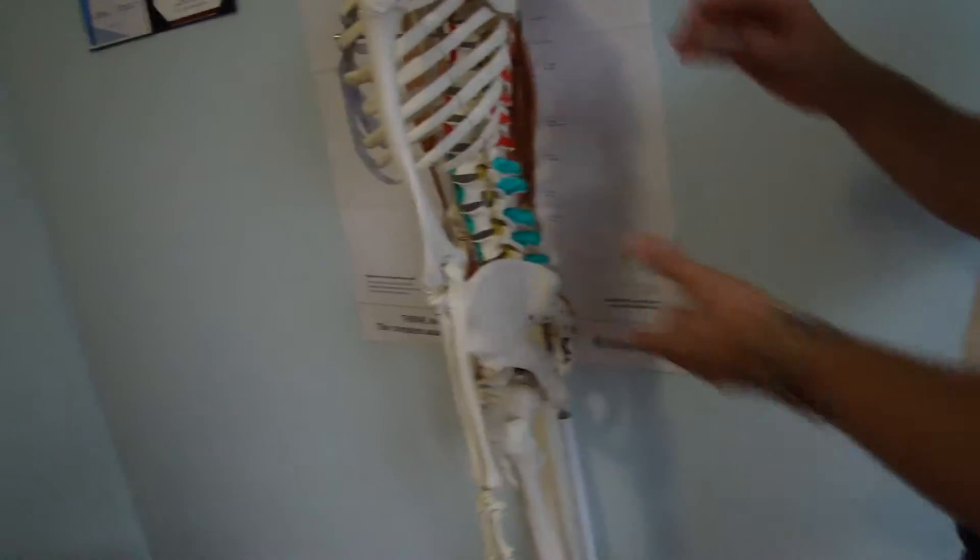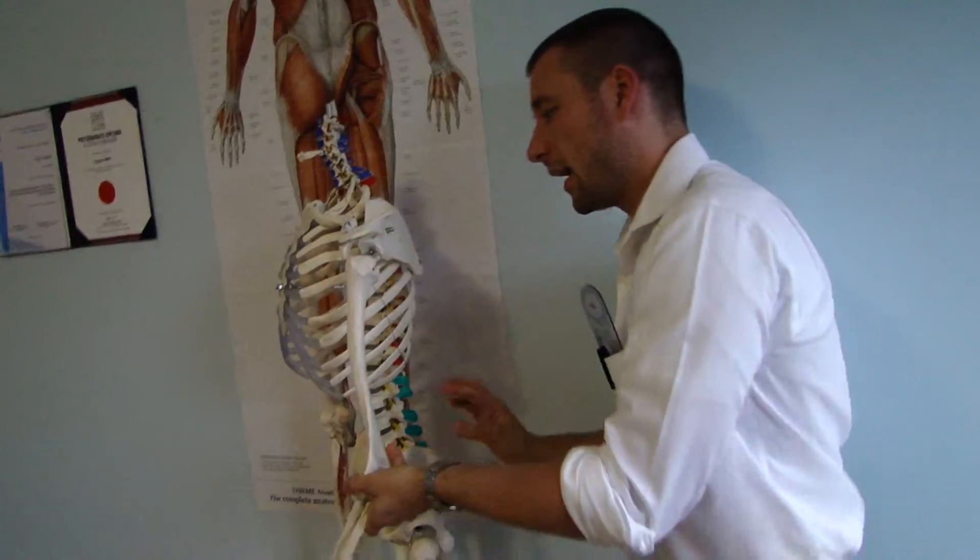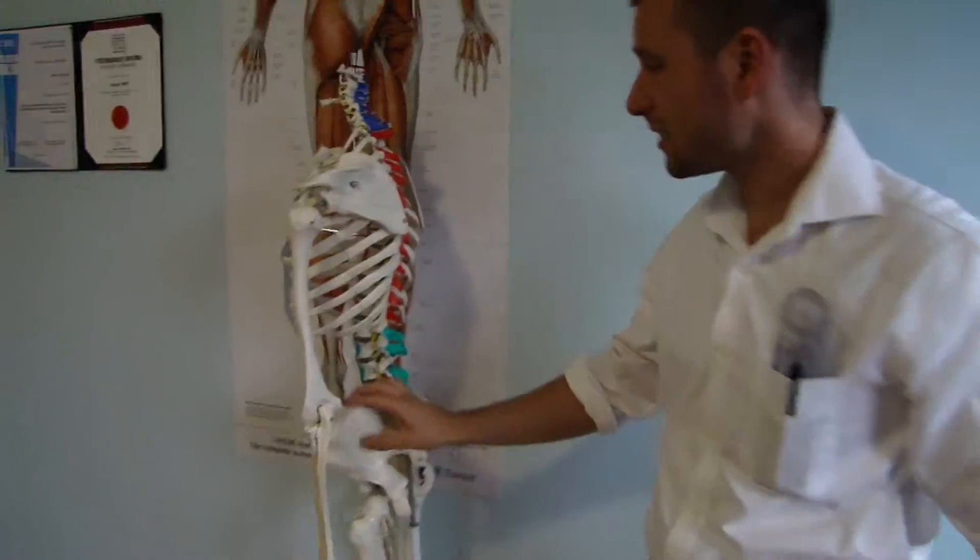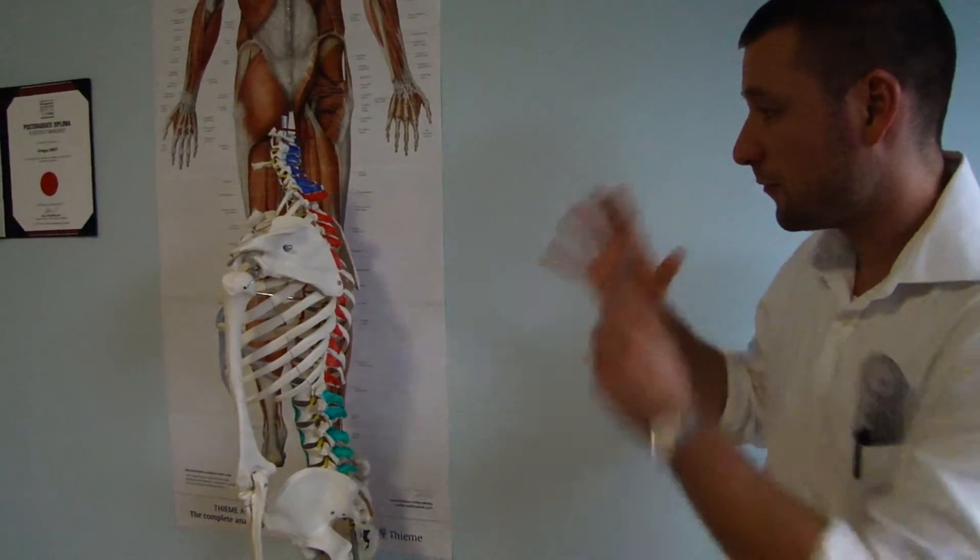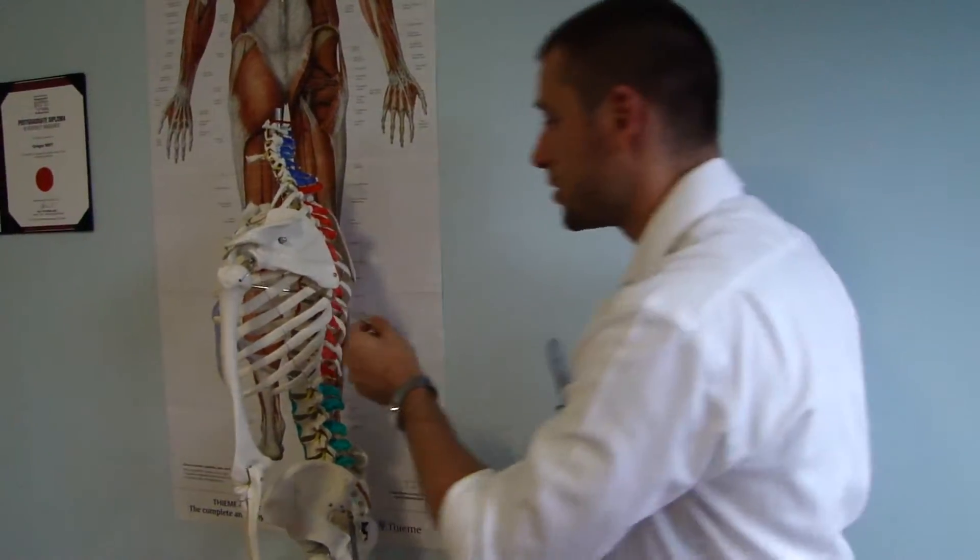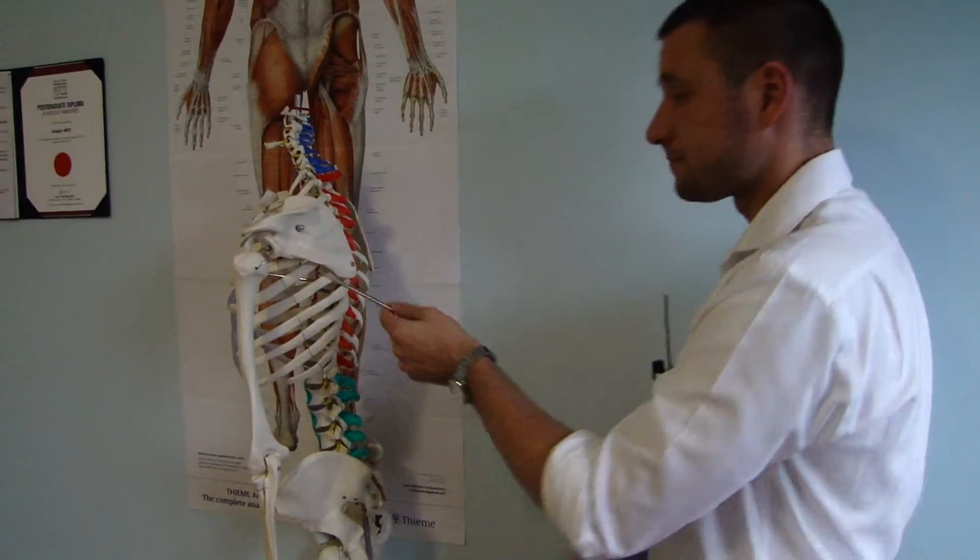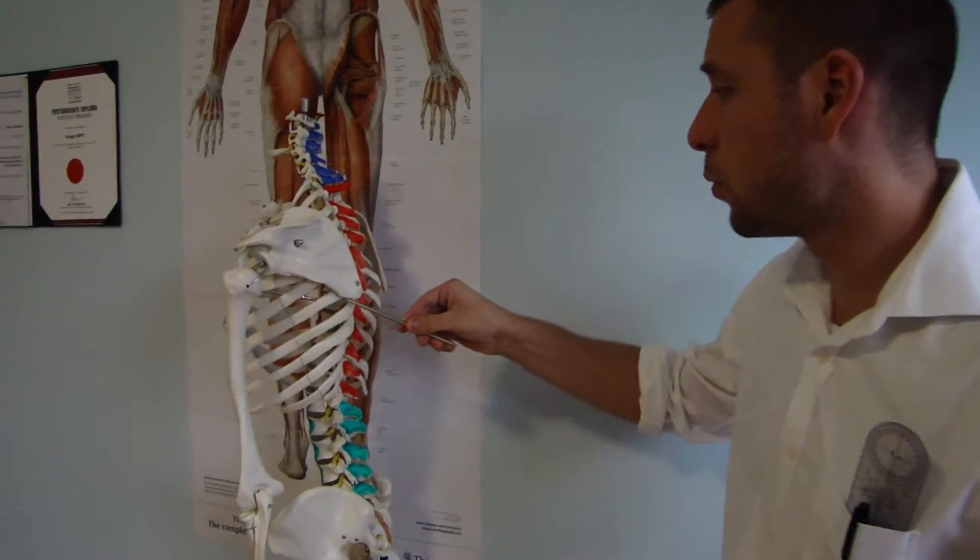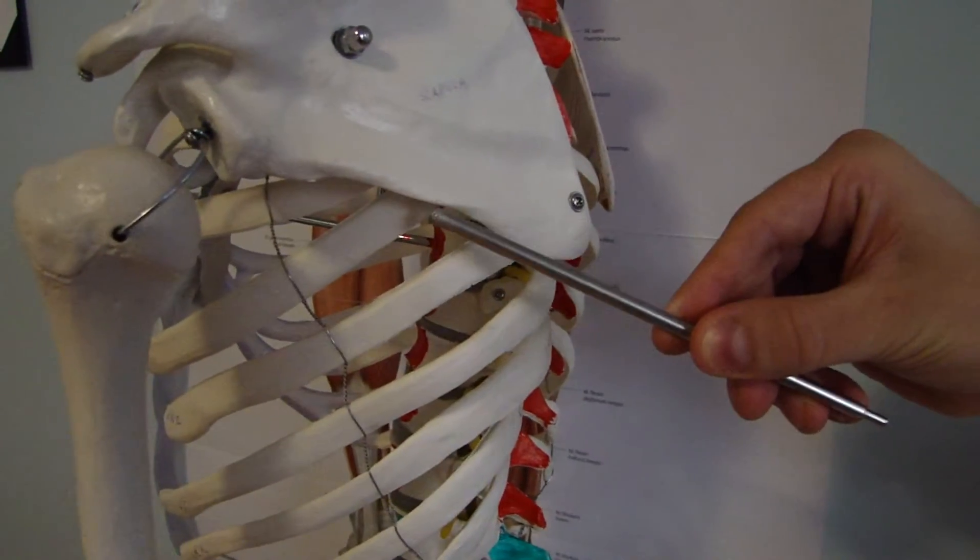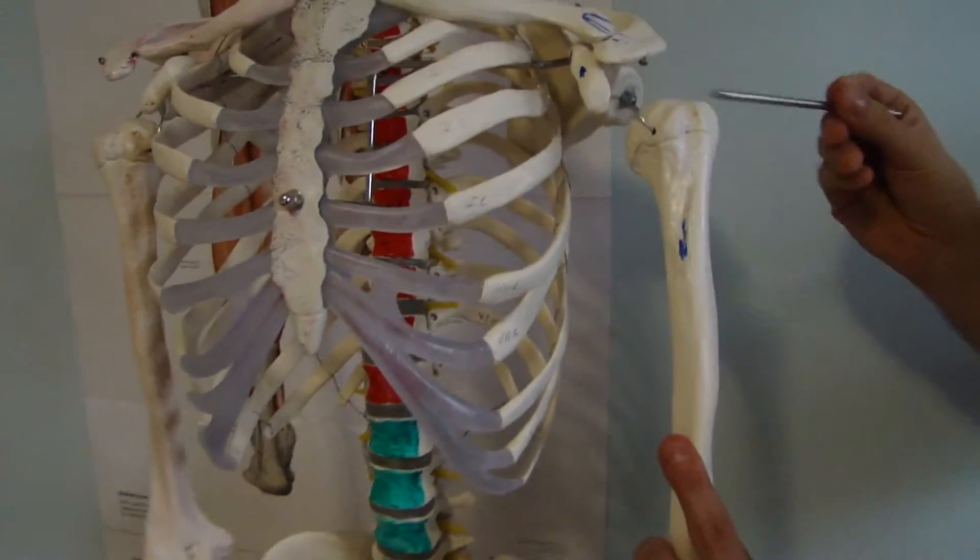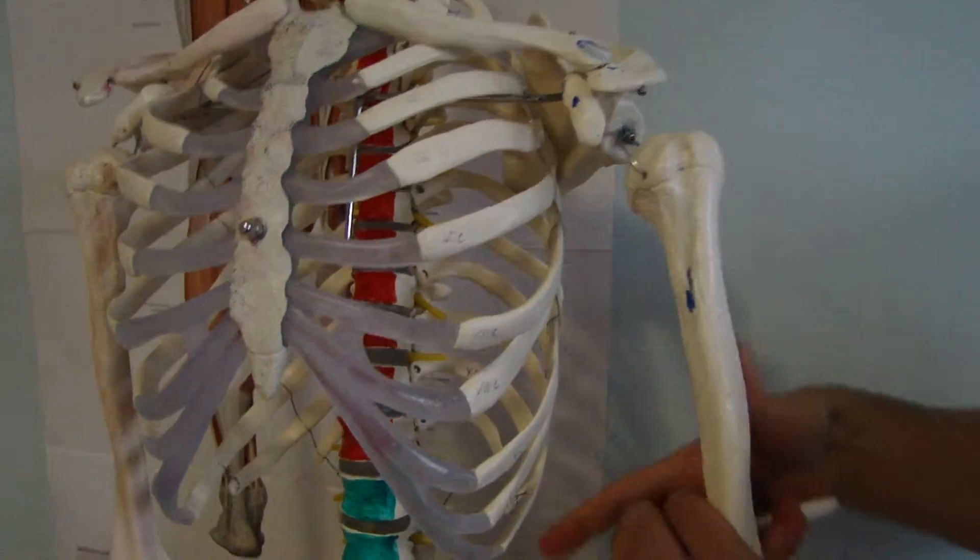And now let's focus on external rotation in glenohumeral joint. External rotation is basically done by two muscles: teres minor and infraspinatus. If you focus now first on teres minor, which gets nerve supply from axillary, it originates over here. This is the lateral border, about middle surface of lateral border and inserts over here on greater tuberosity of humerus.